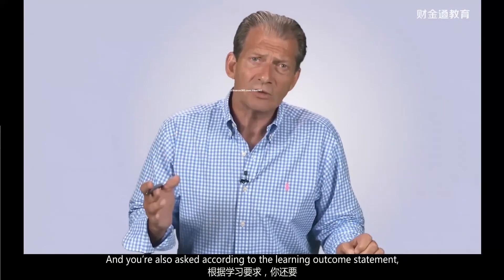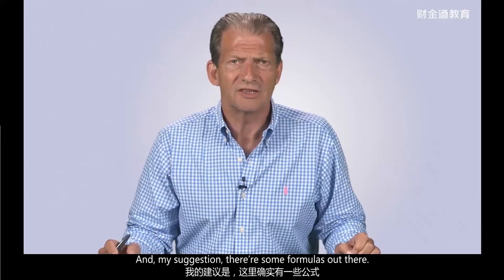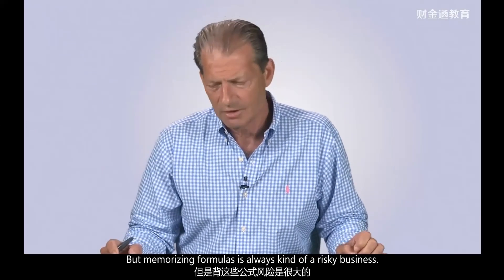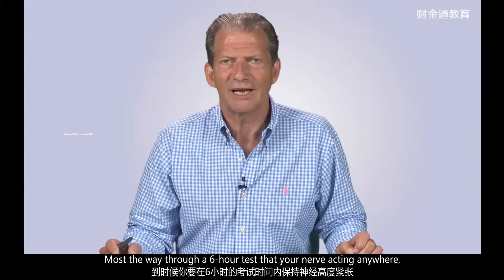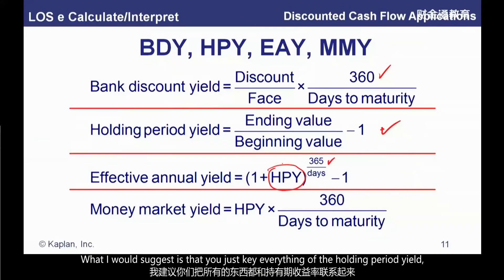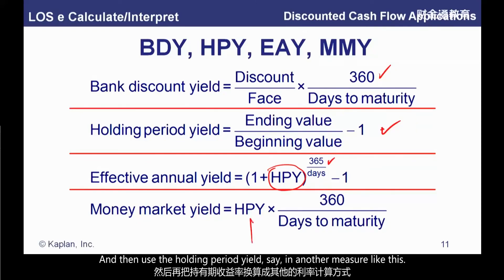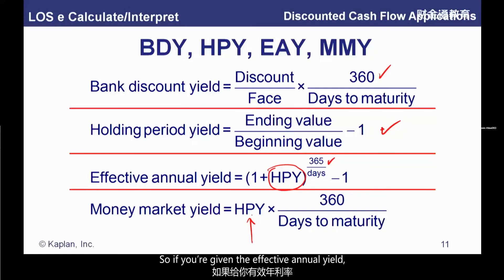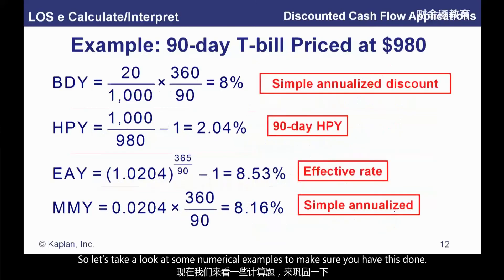You're also asked in the learning outcome statements to be able to convert between and among these measures. My suggestion: memorizing formulas is a risky business — whether you remember them at 3:30 in the afternoon, most of the way through a six-hour nerve-wracking test when your brain is getting tired, that's probably not the best approach. I would suggest you key everything off the holding period yield — be able to go from any measure back to the holding period yield, and then use that holding period yield in another measure. If you're given the effective annual yield and asked for the money market yield, just back the holding period yield out of it and then multiply times 360 over days to maturity. Let's take a look at some numerical examples.